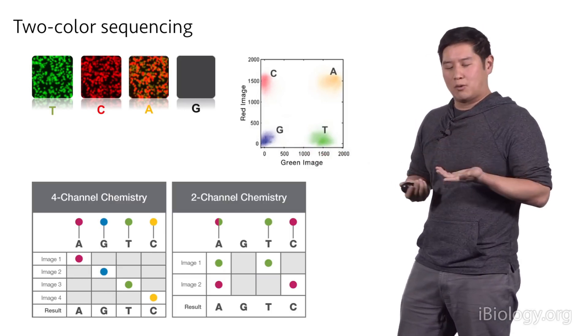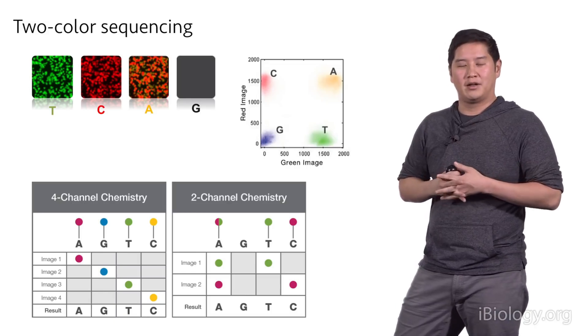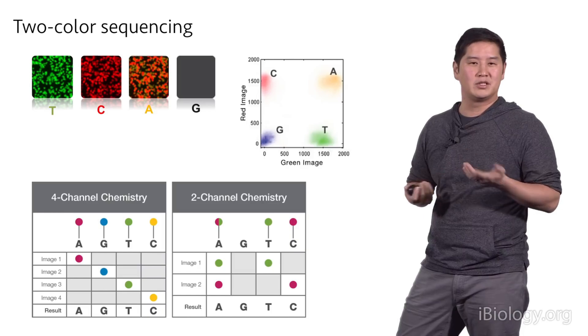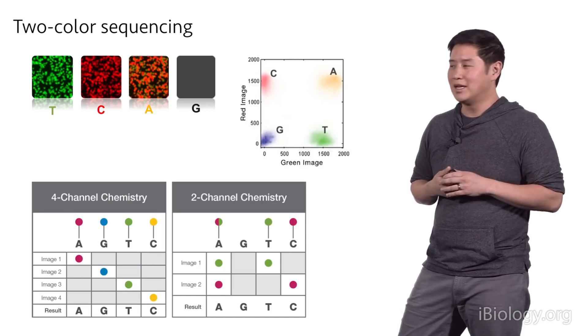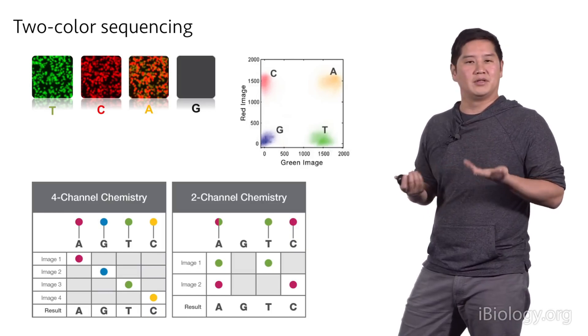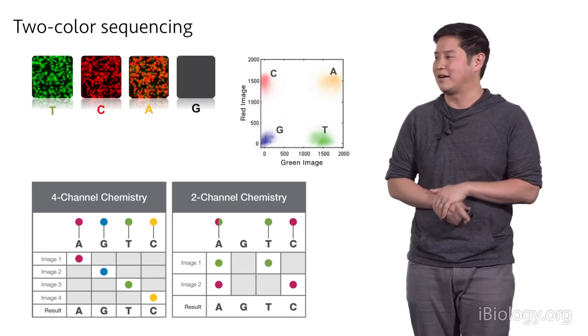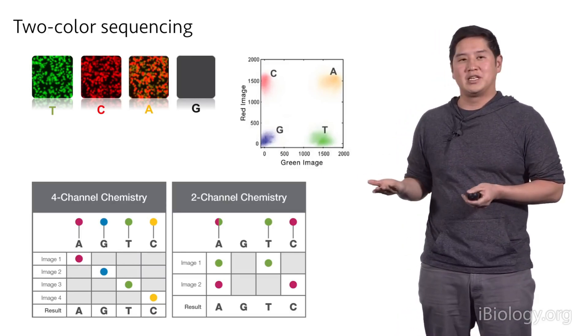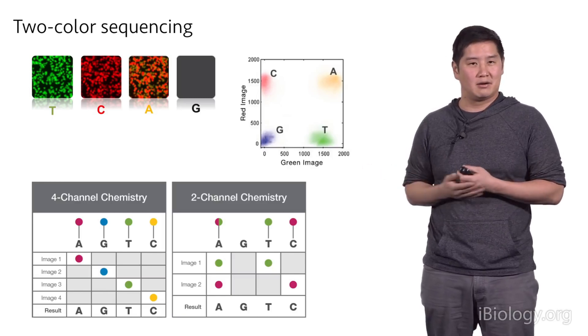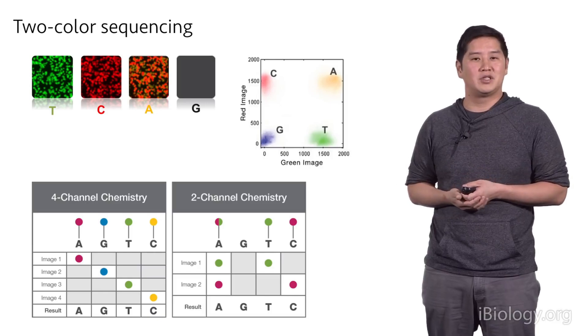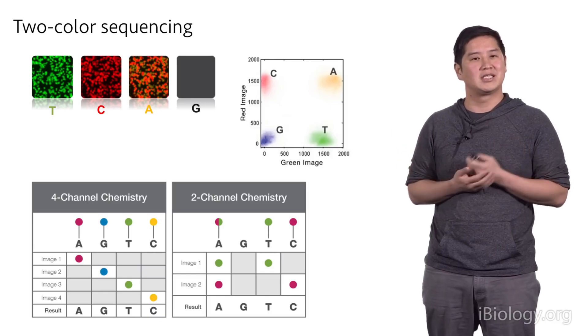And so initially, the quality of the two color chemistry wasn't as great as the four color chemistry. But recent developments on the NovaSeq platform, one of Illumina's newer sequencers that uses two colors, the data quality actually rivals the four color instruments. And so there's definitely been some improvements in this area. The other benefit of two color sequencing is that these reagents are generally cheaper to make because you don't have to have as many colors. And the instruments are also less expensive because you only have to capture two images instead of four.